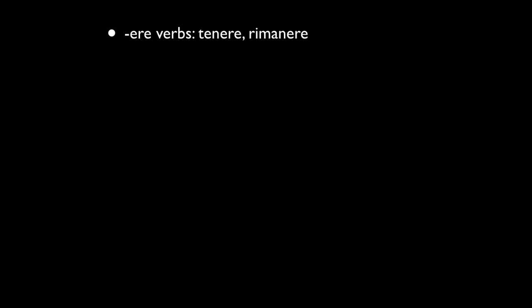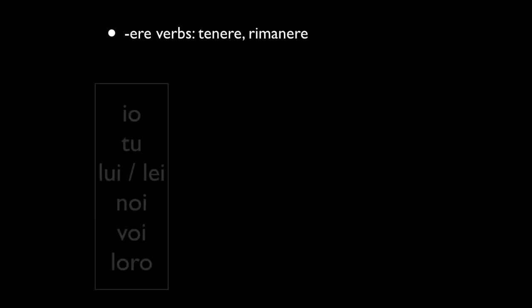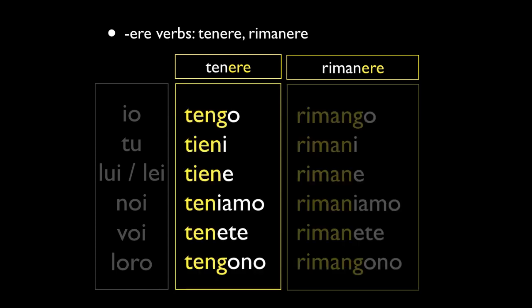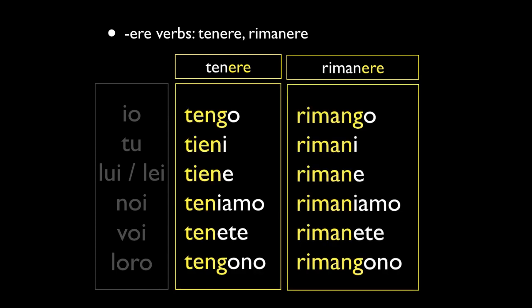Then there are the verbs tenere and rimanere. What's interesting about these is that they add a G in certain spots, and tenere also has some spelling changes. So: tengo, tieni, tiene, teniamo, tenete, tengono. And rimanere: rimango, rimani, rimane, rimaniamo, rimanete, and rimangono.